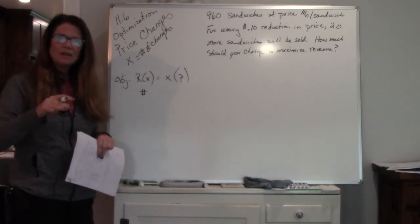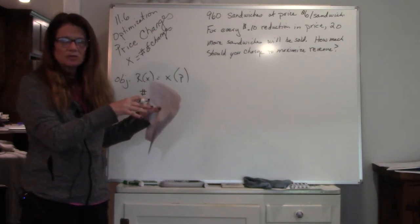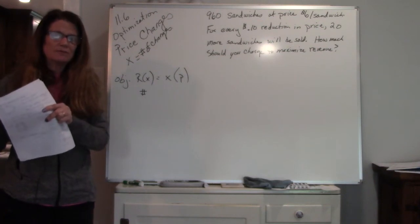The easy thing about this is you keep all the numbers together. How many sandwiches you're selling, and you keep all the price changes together. How much are you selling them for.